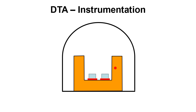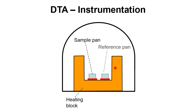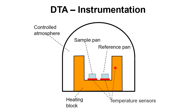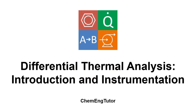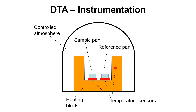Here's a schematic diagram of what the instrument looks like. We have a heating block, the sample pan, the reference pan, and a controlled atmosphere. The dome shape allows us to control the atmosphere by flowing gas through to control its composition, and we can also change the pressure — bringing it right down to vacuum levels, keeping it at atmospheric pressure, or raising it to high pressure. This is very useful for looking at how different thermal processes change under different pressures. We also have temperature sensors, and in the next video we'll get into how this can actually be used to analyse a sample.